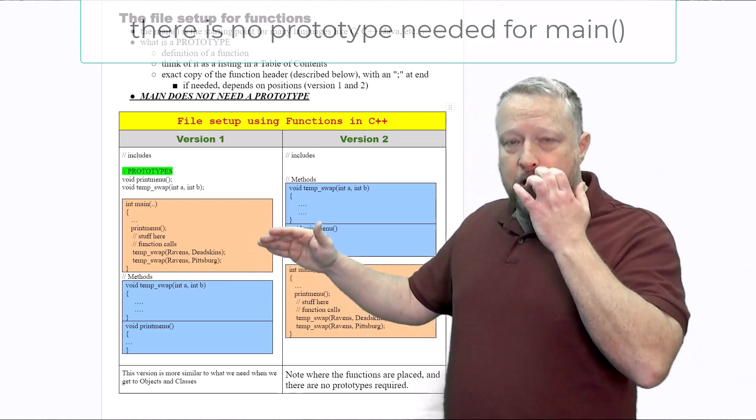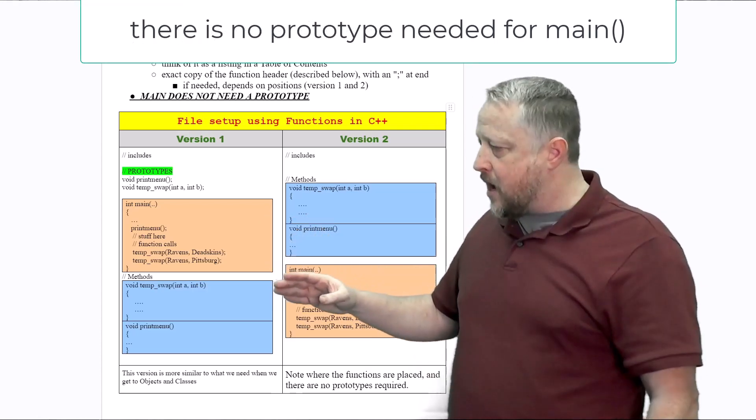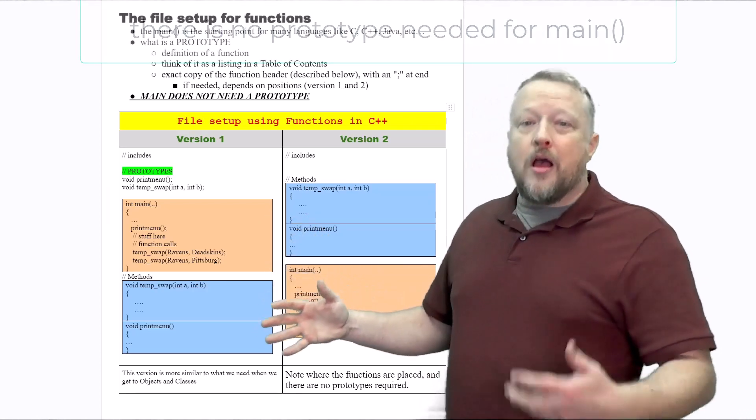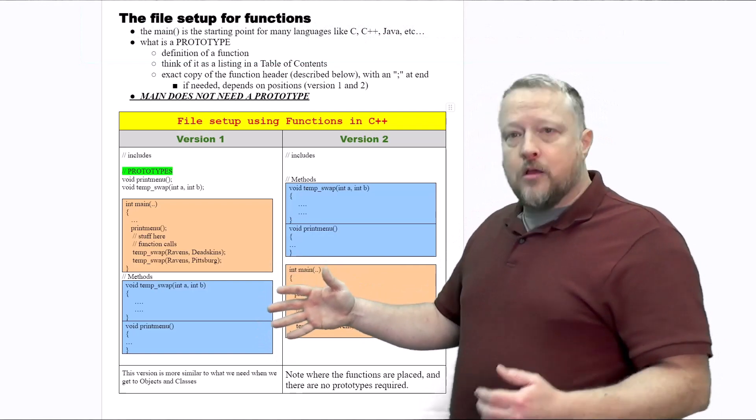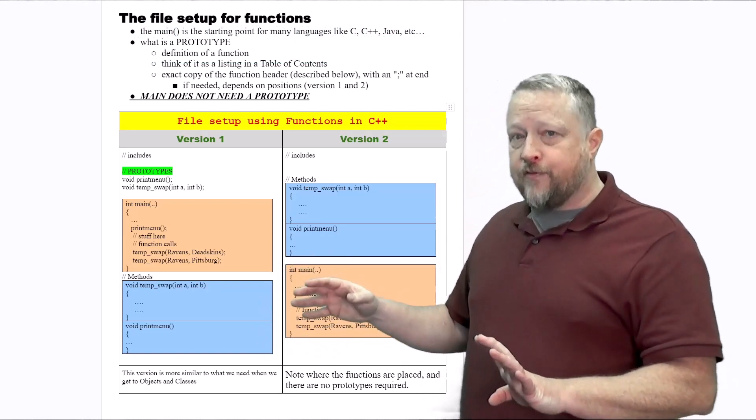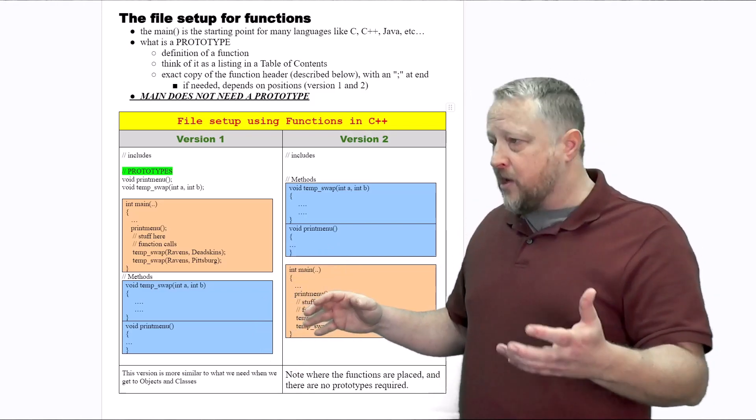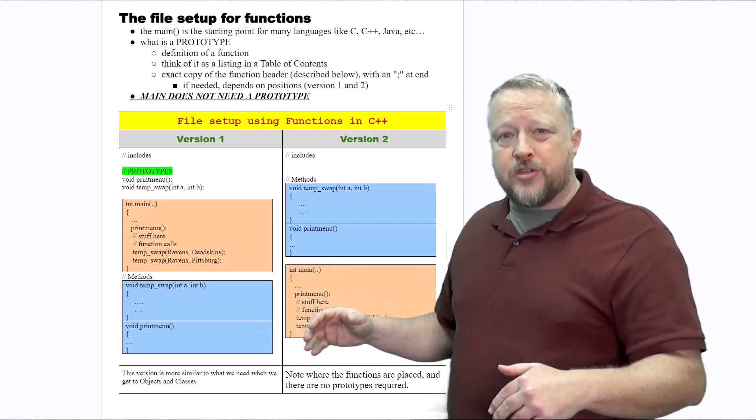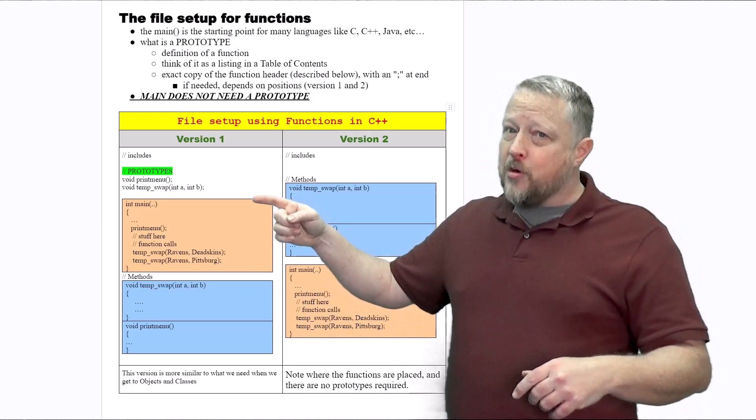Main is no different than what you've seen before, so let's move beyond that. Here are your eventual functions. Now again, you can have one function, three functions, whatever. The positioning is actually very important. As you know in C++, we have to declare the variable before we can use it. That's kind of actually what a prototype is really doing.